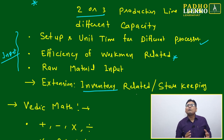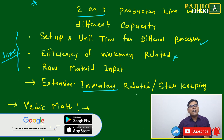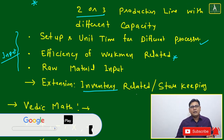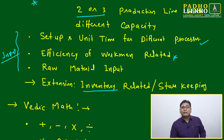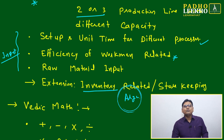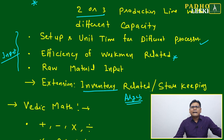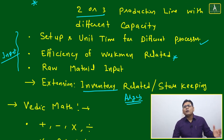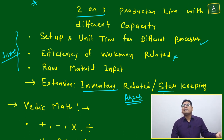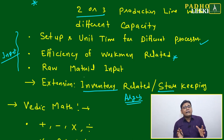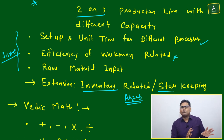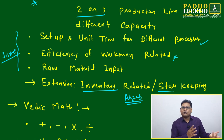Another extension: after manufacturing the product, you may not be able to deliver immediately — demand may come after 6 months or one year, or in staggered intervals. You must keep the finished product in safe storage, maintaining minimum and maximum inventory based on regular demand. This requires algebraic equations to handle minimum inventory, maximum inventory, and minimum rate of production — a topic on which CAT has already asked questions once or twice.